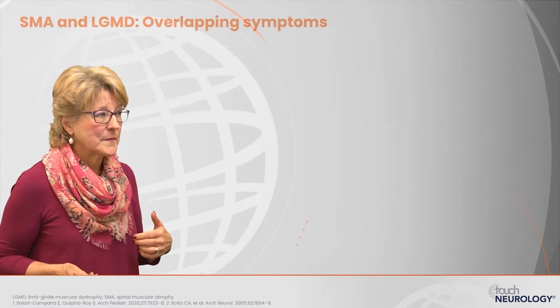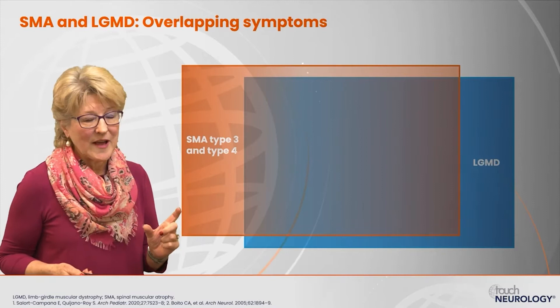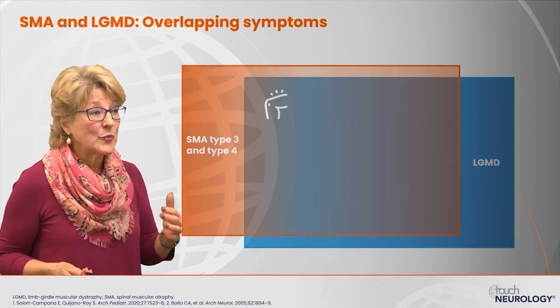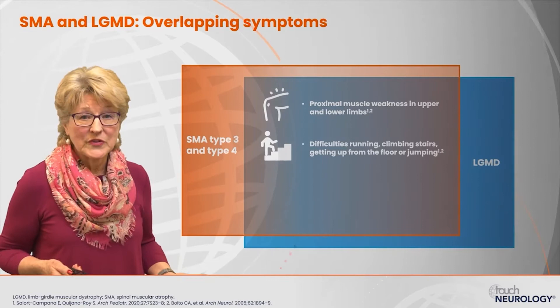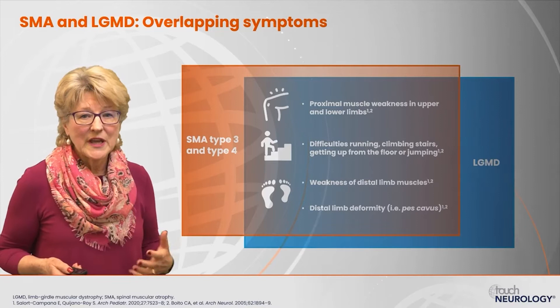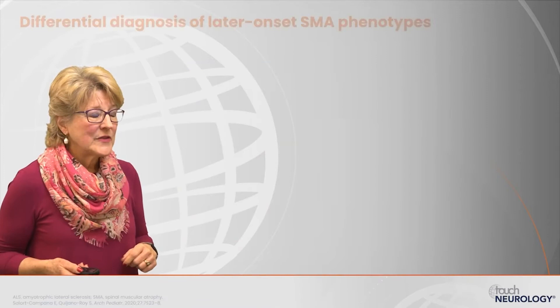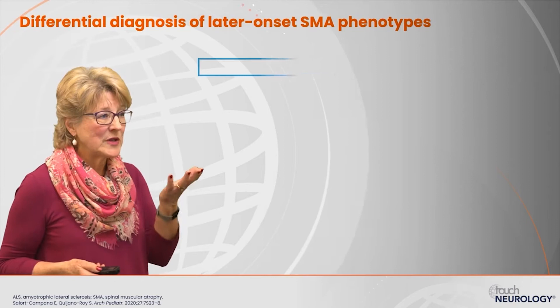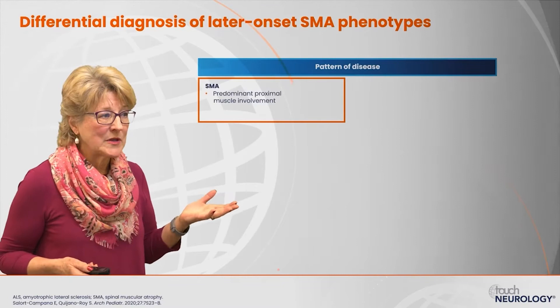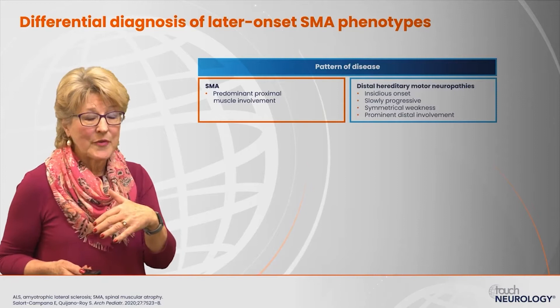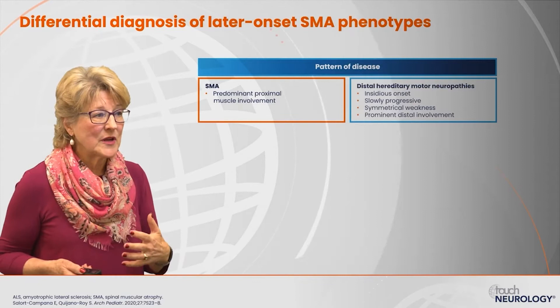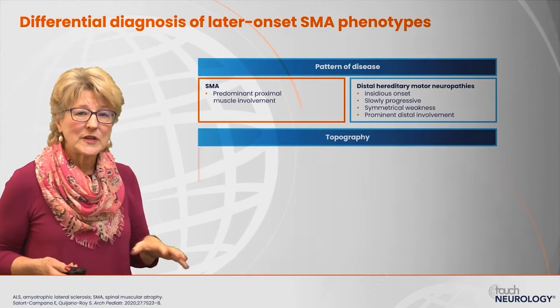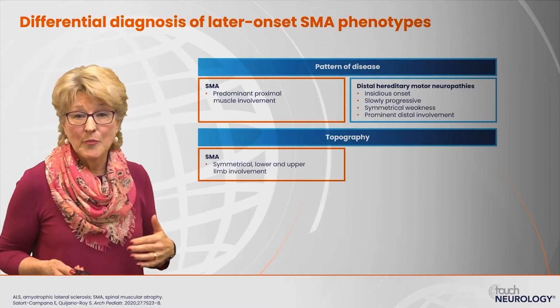Spinal muscular atrophy and limb girdle dystrophies have many overlapping symptoms, including proximal muscle weakness in upper and lower extremities, difficulties running and climbing stairs, getting up from the floor or jumping, standing from a low seat, weakness of the distal muscles, and in chronic cases pescavus or foot deformity. When thinking about the differential diagnosis, SMA is predominantly proximal muscle involvement, whereas hereditary sensory motor neuropathies tend to be more distal, with weakness more distally, usually symmetric and very slowly progressive. SMA generally presents with symmetric weakness, but asymmetric cases can occur.